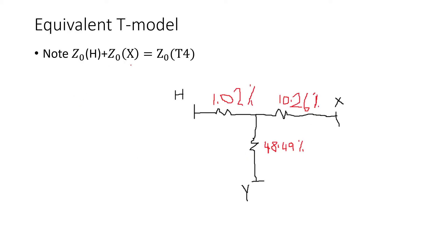So here's the equivalent T-model. Basically the T-model, you have the high side, the midpoint, then you have the low side, then you have the tertiary or the Y side. So for the H side I got 1.02%, for the low side I got 10.26%, for the Y I got 48.49%.